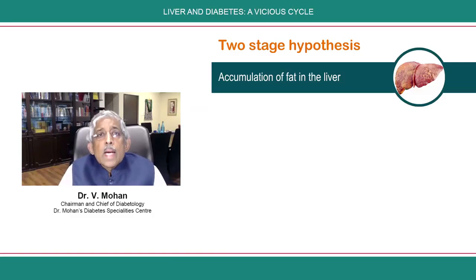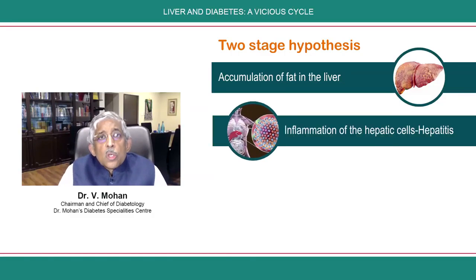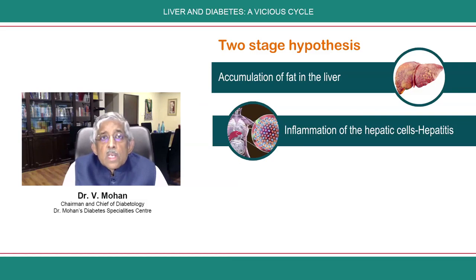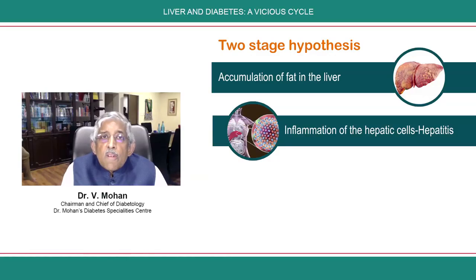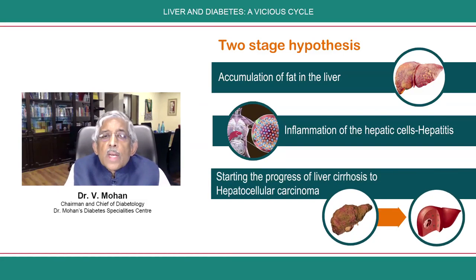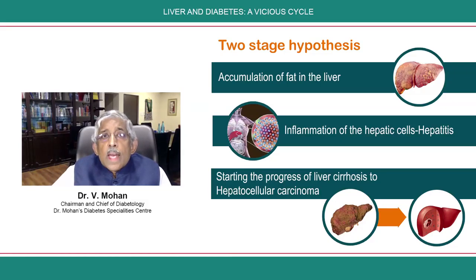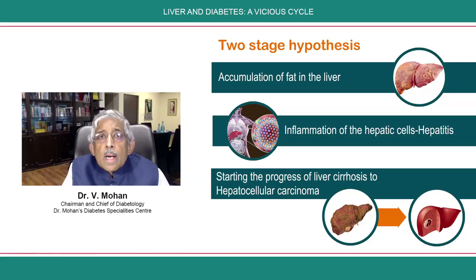The second hit occurs when some kind of inflammation develops. The hepatic cells can get inflamed, and when that happens it leads to hepatitis. So from non-alcoholic fatty liver disease, it goes to the stage of hepatosteatohepatitis — inflammation of the liver. Once that inflammation occurs and you get steatohepatitis, you are setting in motion a cycle that can lead to fibrosis, cirrhosis of the liver, and even hepatocellular carcinoma in the final stages.